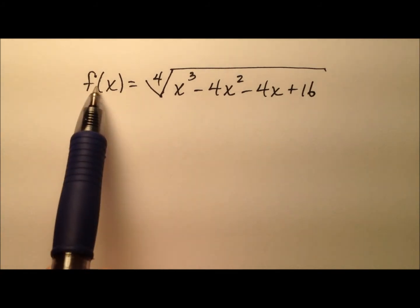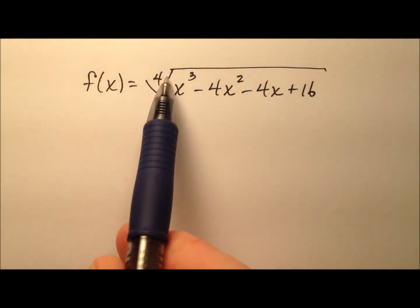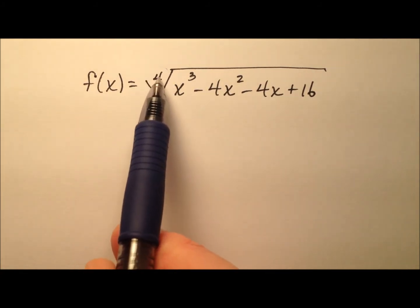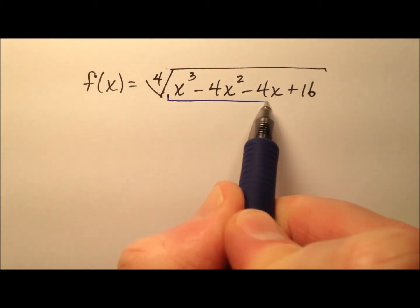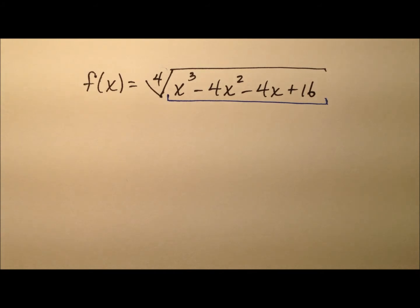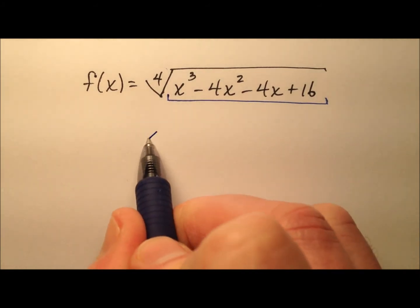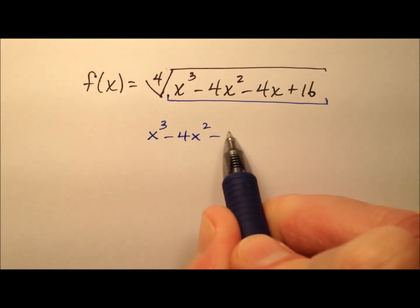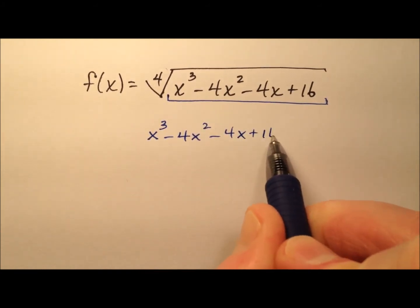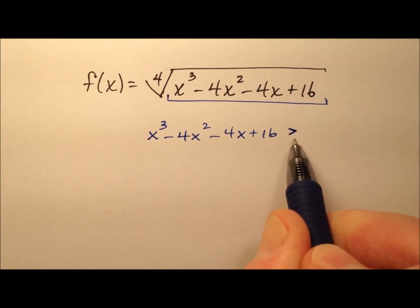All right, so when we see this function definition, we see that it's the fourth root, so it's an even root or an even index, which means that this radicand cannot be negative. So we need to write this x cubed minus 4x squared minus 4x plus 16 as an inequality because it must be greater than or equal to 0, so must be non-negative.